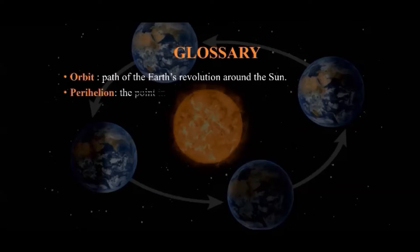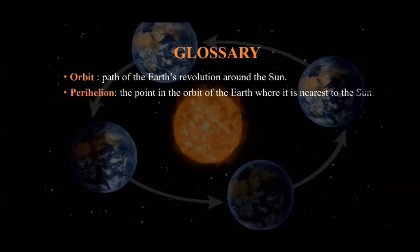Perihelion. Perihelion is the point in the orbit of the Earth where it is nearest to the Sun. That means, at the point of perihelion, the Earth is nearest to the Sun.